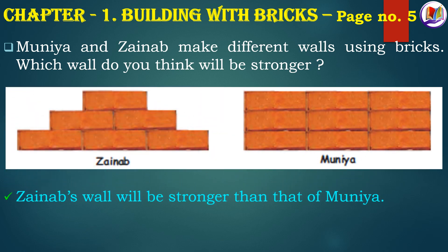Next, Muniya and Zainab make different walls using bricks. Which wall do you think will be stronger? Now, what does Zainab do? She places 3 bricks initially and in the gaps of the 3 bricks, she places 2 above them, and then one more above the 2 bricks. What does Muniya do? She places 3 bricks and exactly above them, she places another 2 layers of bricks. So, whose wall would be stronger, do you think? Of course, Zainab's wall, because she is covering up the gaps and making it more stronger. So, Zainab's wall will be stronger than that of Muniya.